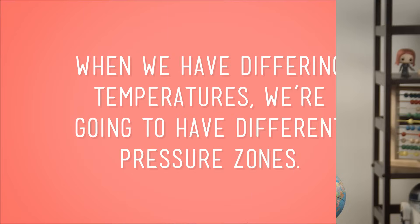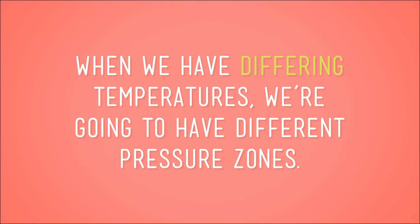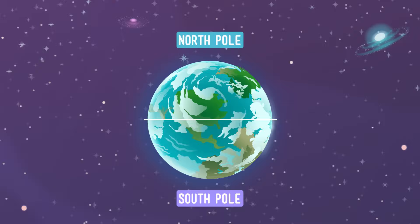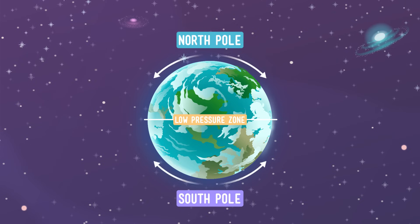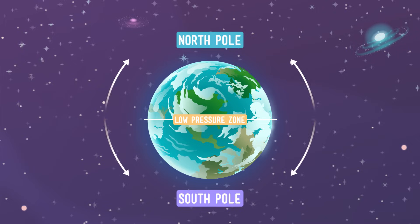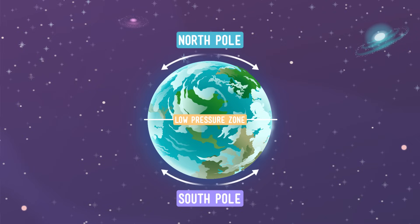This means the Earth's equator is much warmer than the poles — you wouldn't pack a swimsuit for a trip to the Arctic. And when we have differing temperatures, we're going to have different pressure zones. The area around the equator is a low pressure zone, where the warm air rises and starts to slowly move towards the poles.